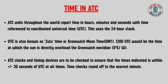ATC units throughout the world report time in hours, minutes, and seconds with reference to Coordinated Universal Time, which is called UTC, using a 24-hour clock format. UTC is also known as Zulu time or Greenwich Mean Time. 1200 hours UTC is the time at which the sun is directly over the Greenwich Meridian, located at 0 degrees east or west. ATC clocks and timing devices are checked to ensure the time indicated is within plus or minus 30 seconds of UTC at all times, and time checks are rounded off to the nearest minute.